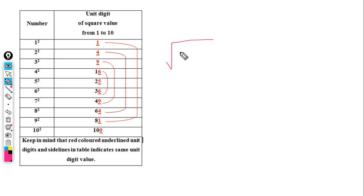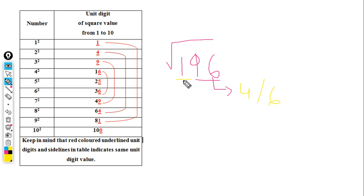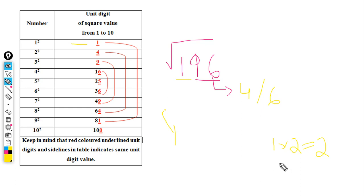Let's take the example of 196. Look at the last two digits — 96. The unit digit is 6, which comes from 4² and 6², so the answer ends in 4 or 6. Now, 1 is nearest to 1², so 1 is the first part. To decide between 4 and 6, multiply the next number: 1 × 2 = 2. The obtained number 2 is greater than 1.